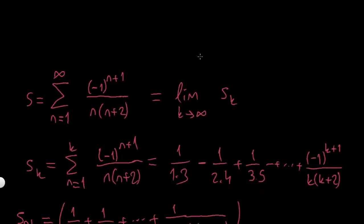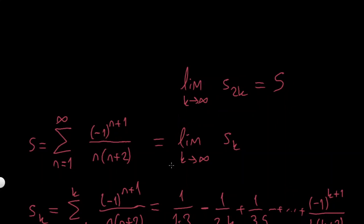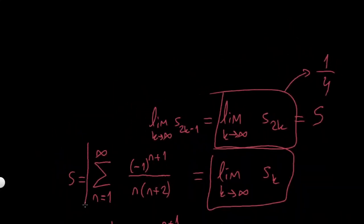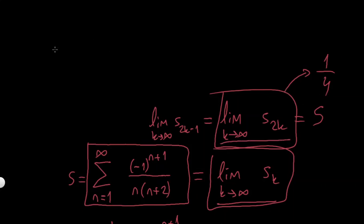I only checked limit of S2k, and I said limit of S2k equals s. We know that if limit as k goes to infinity of Sk exists, then every subsequence — including S2k and S2k−1 — must converge to the same number. So if I know the full limit exists, and I found the limit of S2k equals 1/4, then the answer will be 1/4. But I still need to show the series is actually convergent.